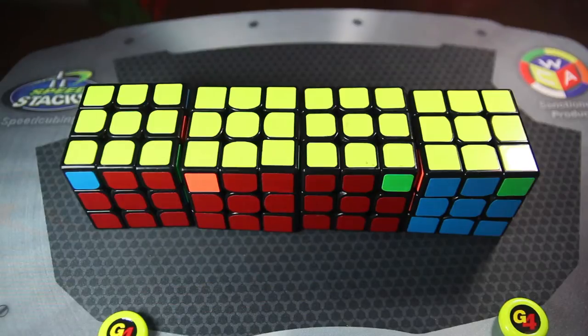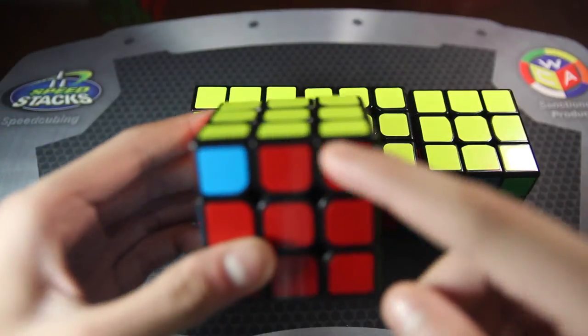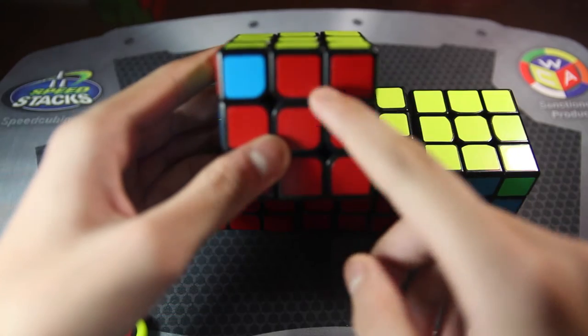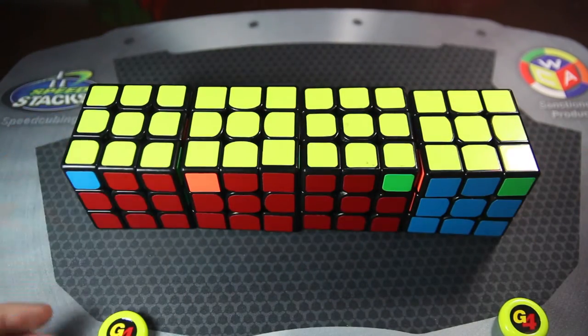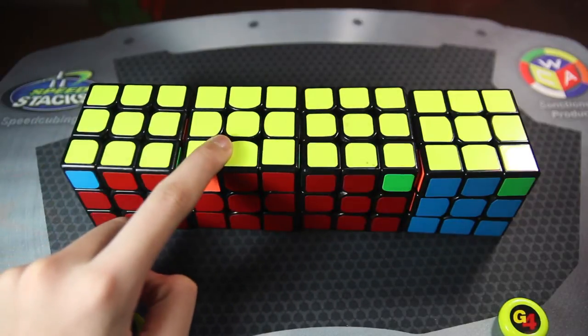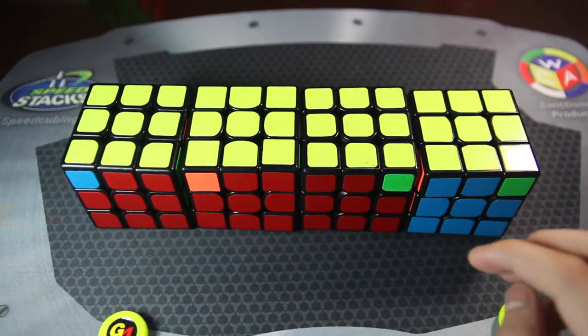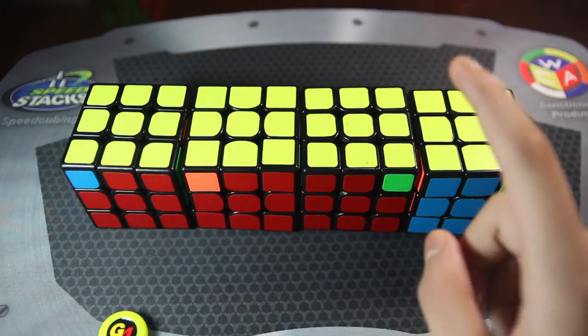So first, if the block is on the right side like this, like if you're facing the block and the block is on the right side, that means that it's either G A-perm or G B-perm. And if the block is on the left, it's either C or D.